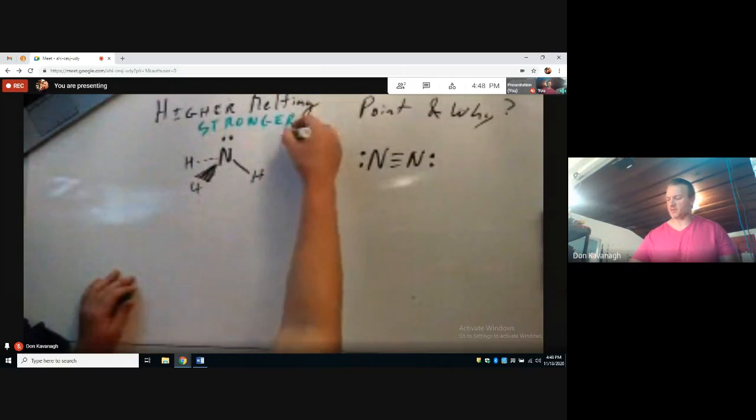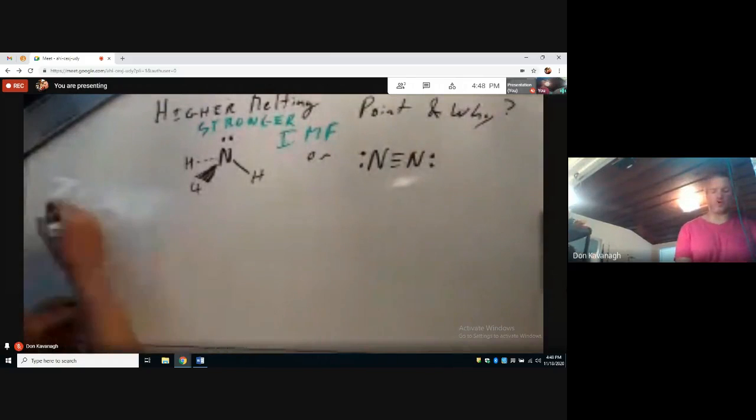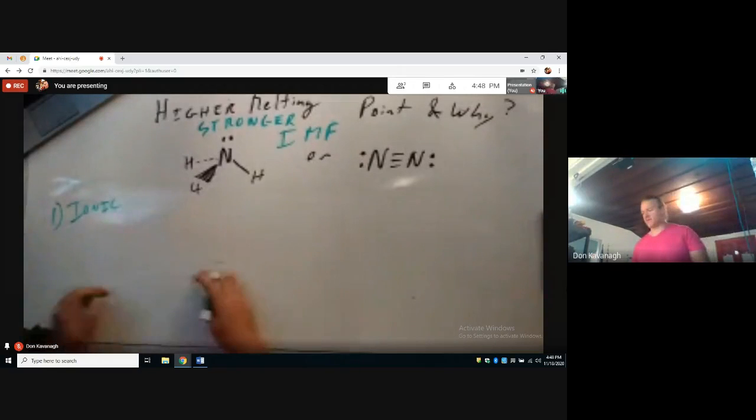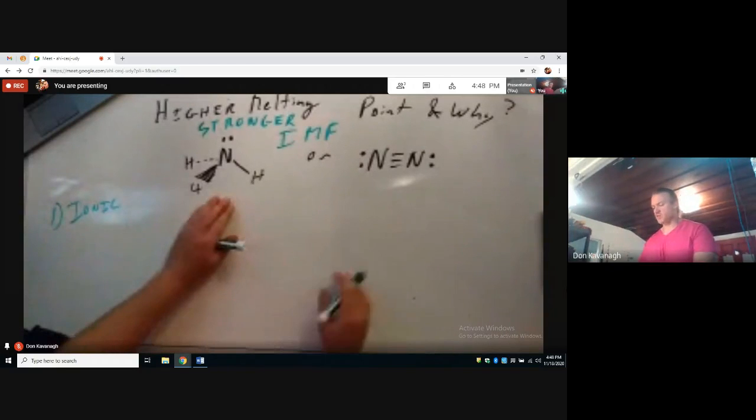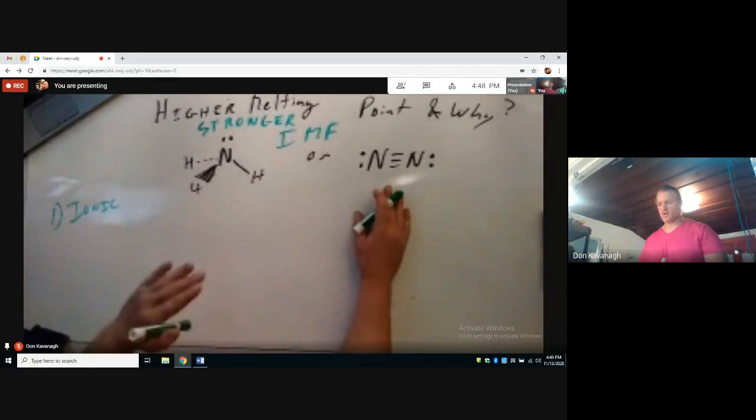An intermolecular force is often abbreviated just IMF. So one of the stronger intermolecular forces is ionic. If we have an ionic compound, if one of these was ionic and the other one wasn't ionic, we would say immediately, the ionic compound has the stronger intermolecular force, therefore it has the higher melting point.